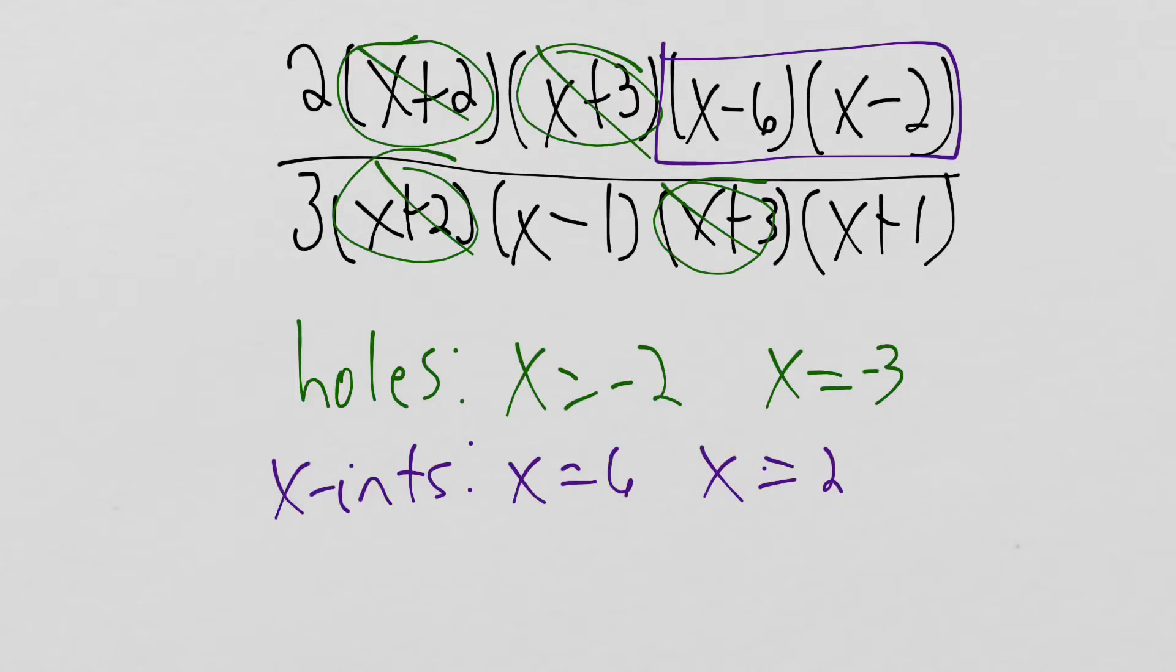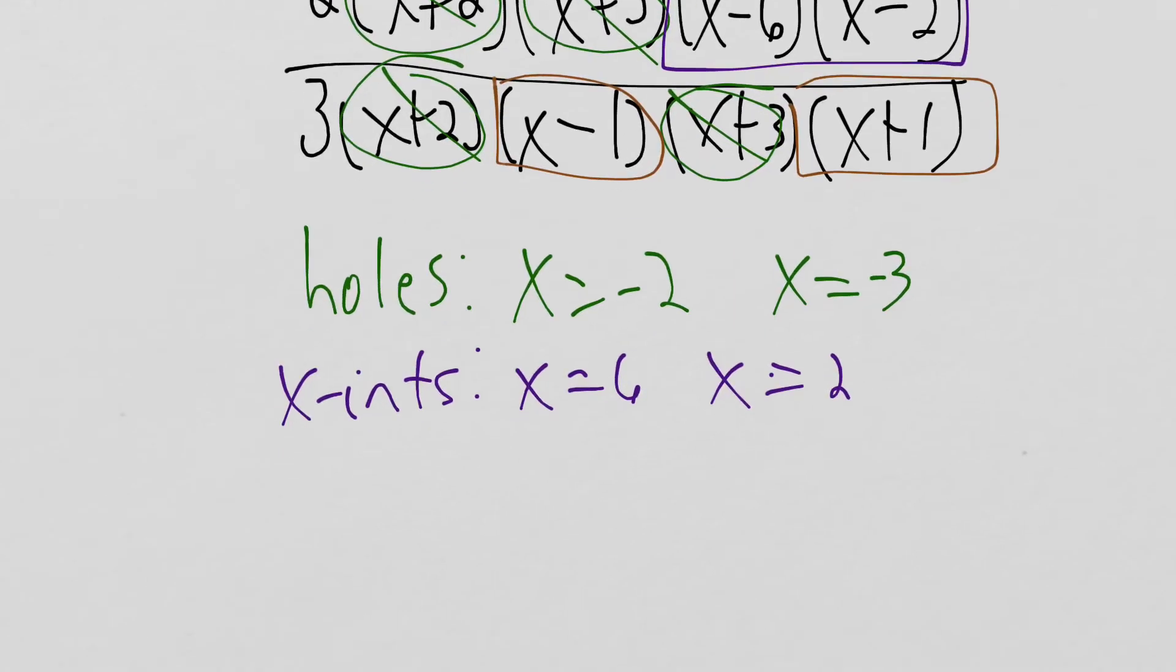And then finally, just in the denominator, we have x minus 1 and x plus 1, and those are going to be vertical asymptotes.